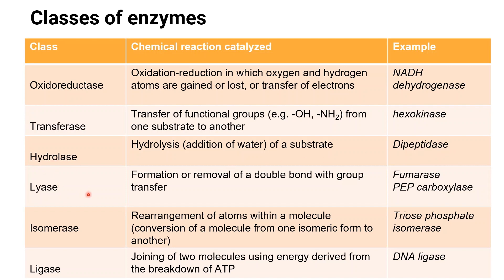Lyase catalyzes the formation or removal of a double bond with group transfer — examples include fumarase and PEP carboxylase. Isomerase catalyzes the rearrangement of atoms within a molecule, converting a molecule from one isomeric form to another — for example, triose phosphate isomerase.